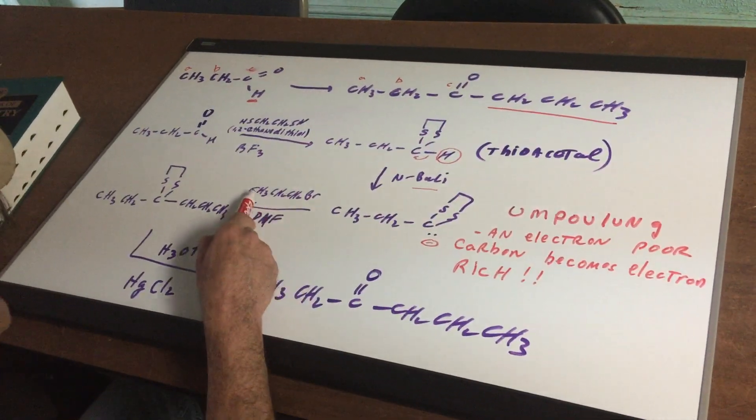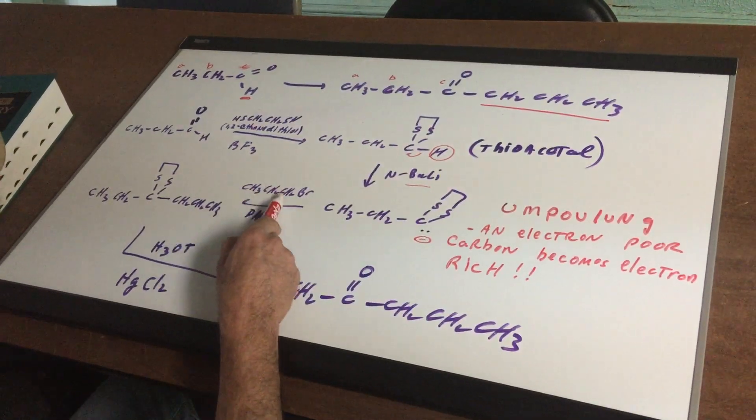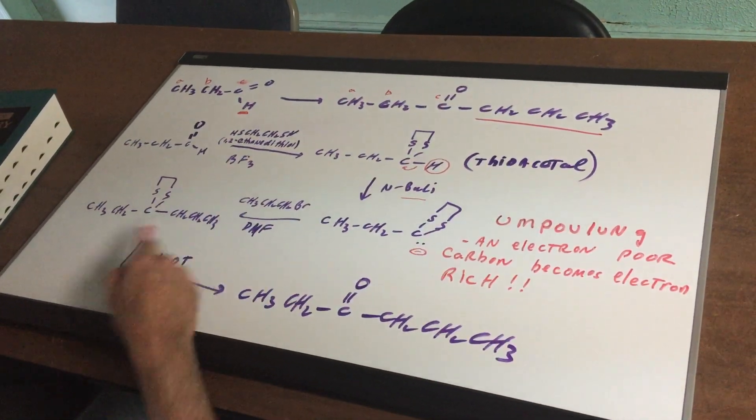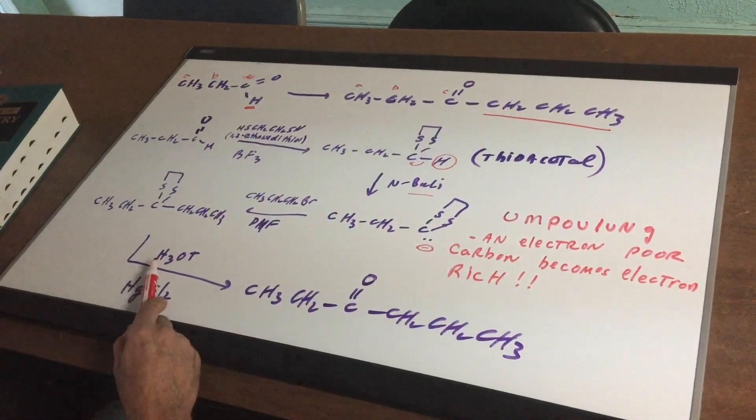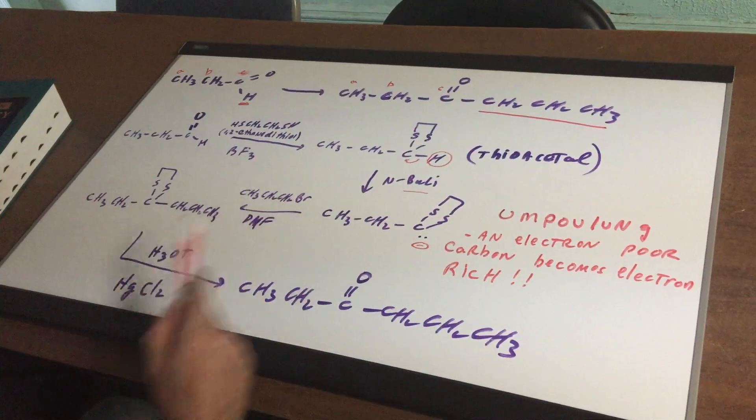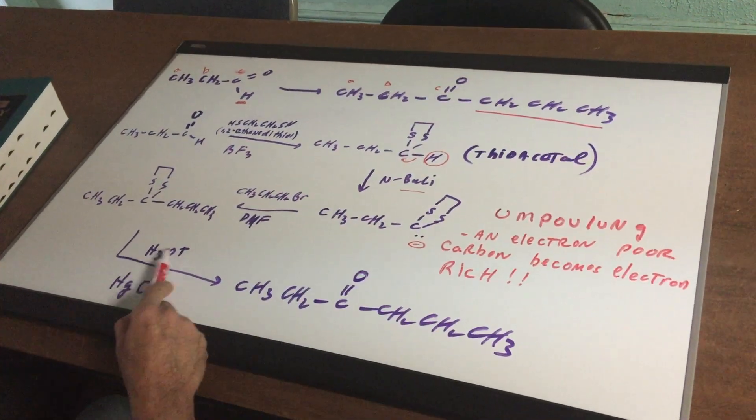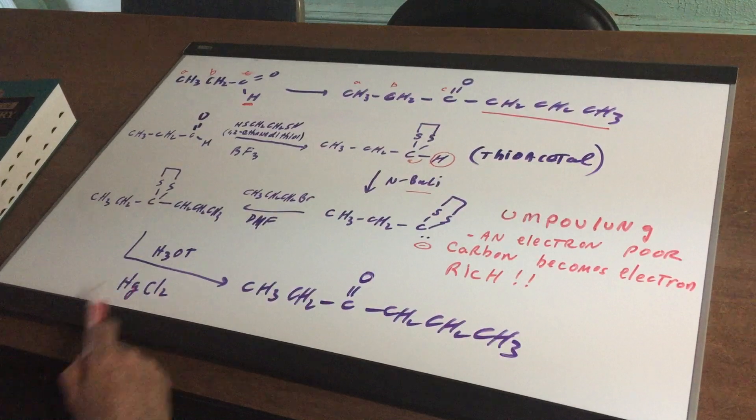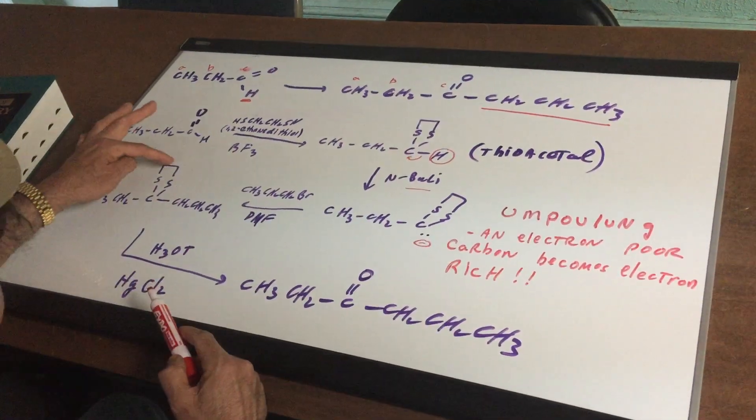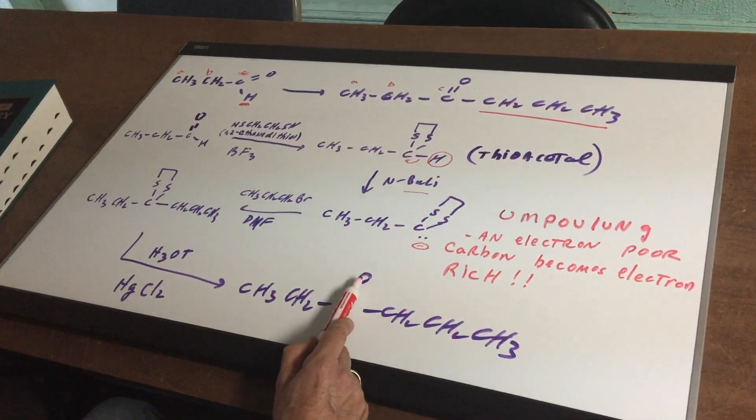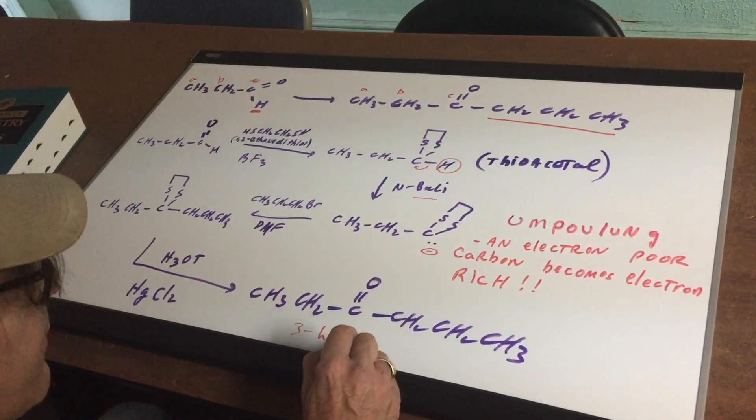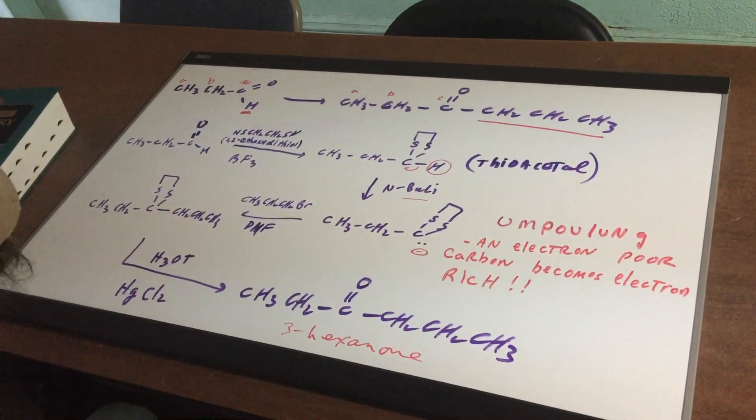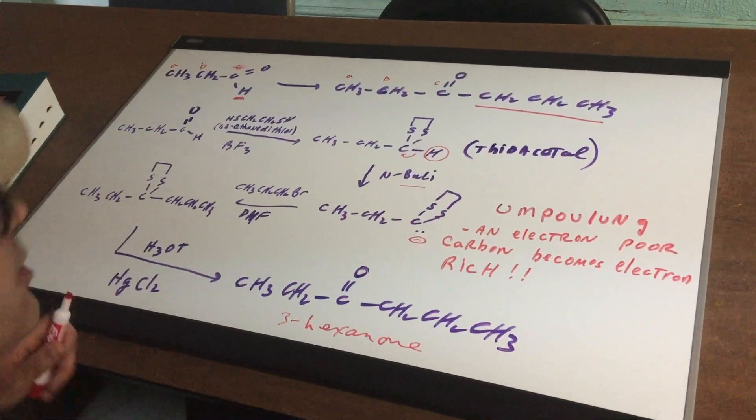Now that it's nucleophilic, I'm gonna simply do an SN2. I'm gonna bring in my three carbon halide and I attach it on, and then the final step I add H3O plus (and I'm gonna show you how this happens in a minute) H3O plus with mercury chloride. Mercury chloride gets rid of the protecting group, makes it into a carbonyl, and there is my chemical known as 3-hexanone. So I've gone from a propanal to a 3-hexanone. Come on over to the board and I'll show you how it happened.